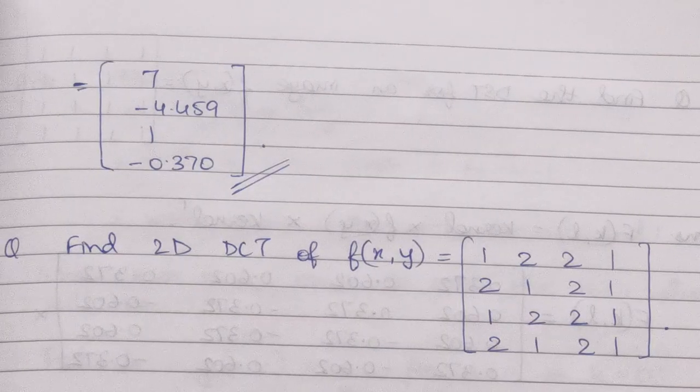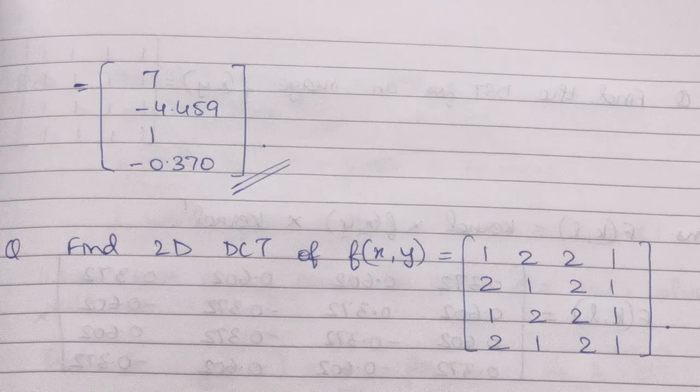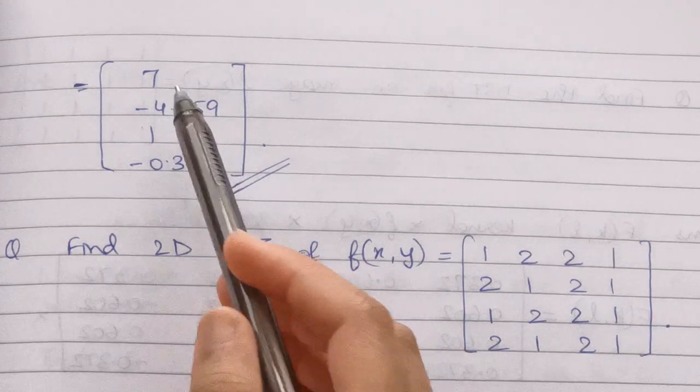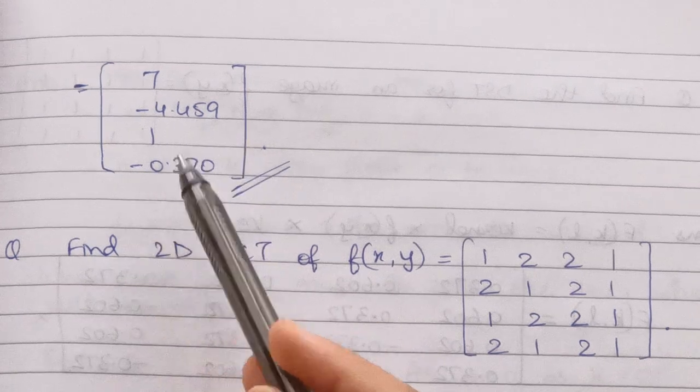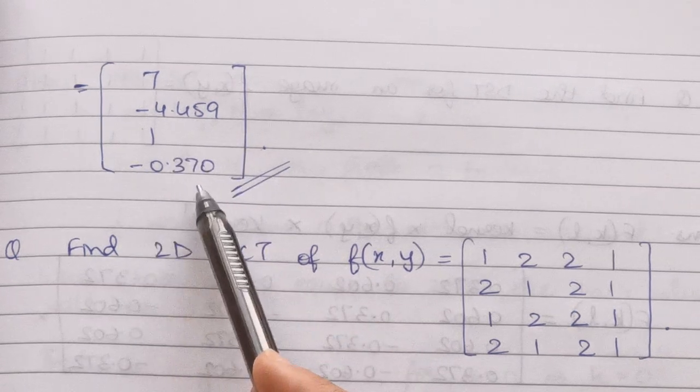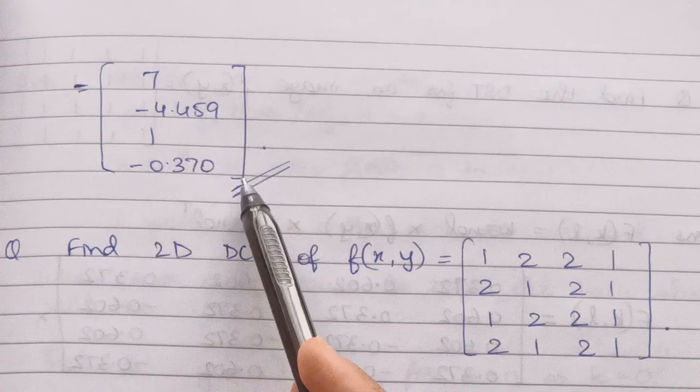I've already done the matrix multiplication for you, and the answer comes out to be [7, -4.459, 1, -0.370]. This is the final answer.